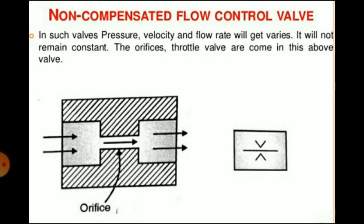In non-compensated flow control valves, pressure, velocity, and flow rate will vary — they will not remain constant. Orifices and throttle valves fall into this type of valve.